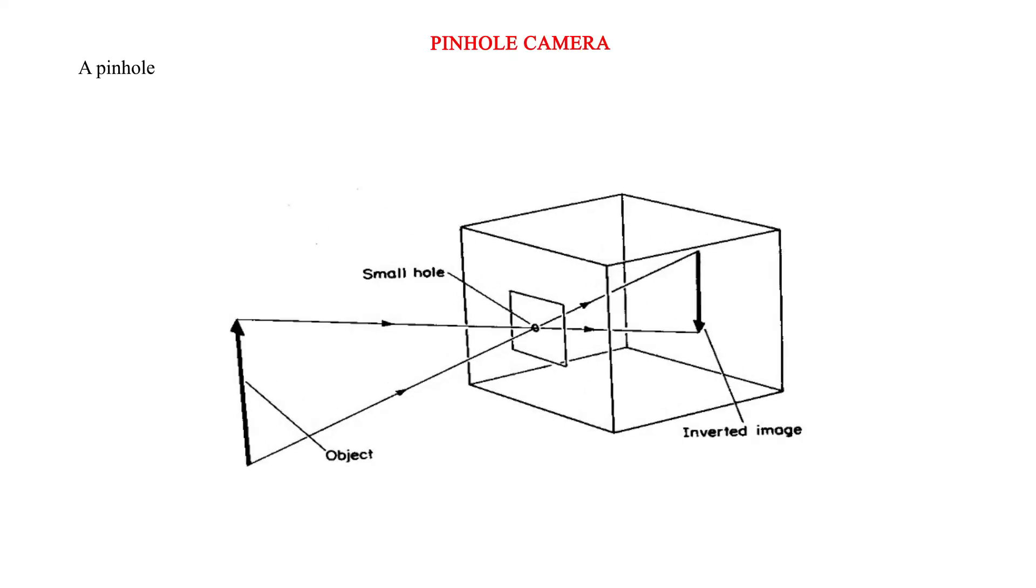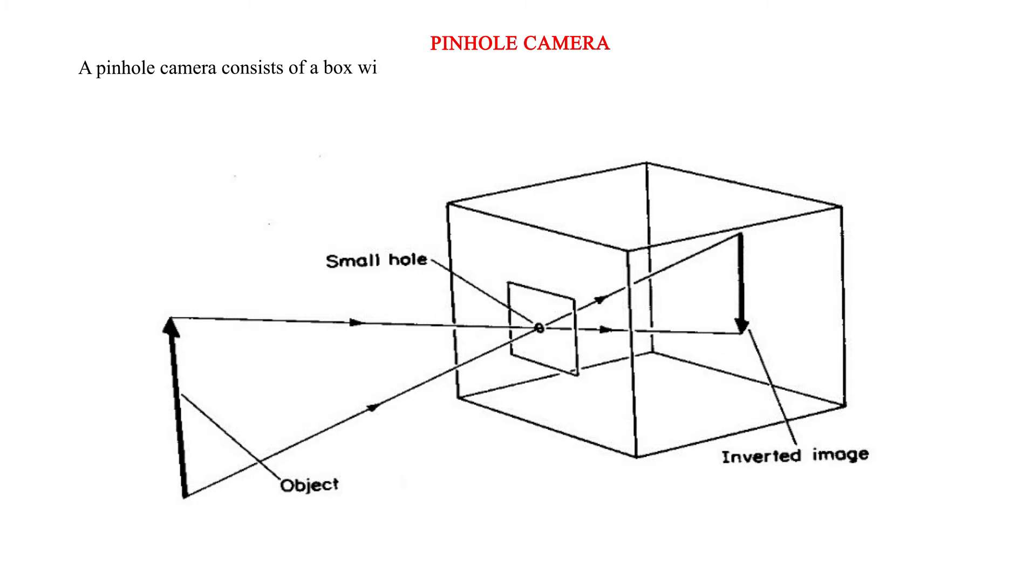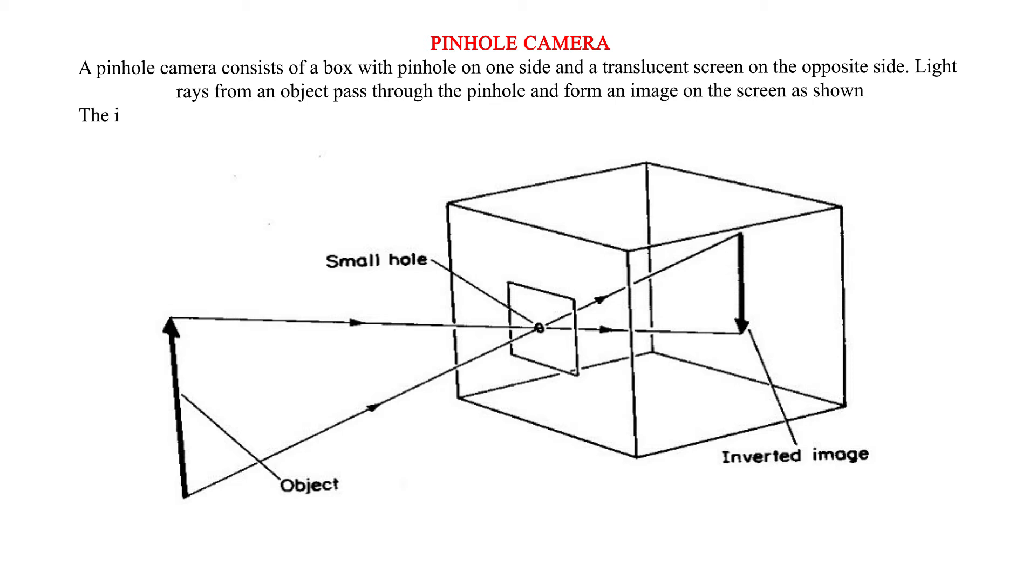A pinhole camera consists of a box with a pinhole on one side and a translucent screen on the opposite side. Light rays from an object pass through the pinhole and form an image on the screen as shown. The image formed is real and is inverted.